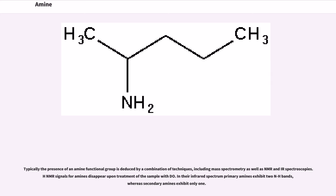Typically the presence of an amine functional group is deduced by a combination of techniques, including mass spectrometry as well as NMR and IR spectroscopies. 1H NMR signals for amines disappear upon treatment of the sample with D2O. In their infrared spectrum primary amines exhibit two NH bands, whereas secondary amines exhibit only one.